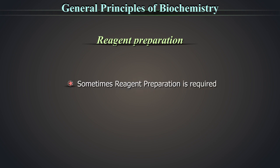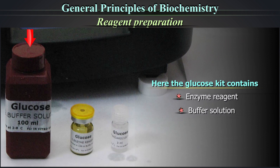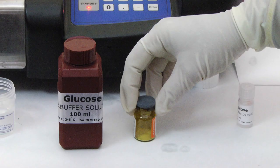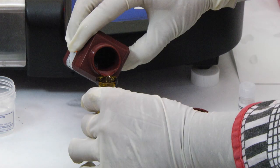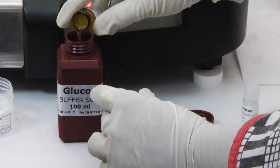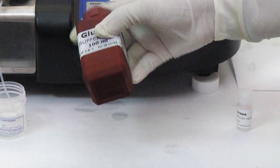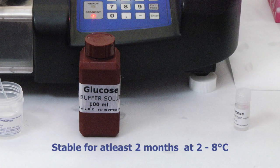Sometimes reagent preparation is required. Here, the glucose kit contains enzyme reagent, buffer solution, and standard. To prepare the reagent used in this test, dissolve one vial of enzyme reagent, which is in a powdered form, in one bottle of buffer solution. Dissolve the powder with buffer solution and then pour the entire amount into the buffer solution. Mix gently to make it homogeneous. The prepared working enzyme reagent is stable for at least 2 months at 2 to 8 degrees Celsius.